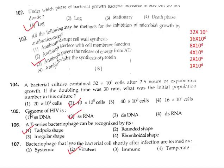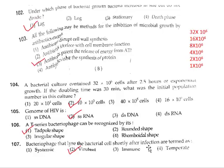Question 105: The genome of HIV is single-stranded RNA. Correct answer is option 2. Question 106: A T-series bacteriophage can be recognized by its tadpole shape. Correct answer is option 1. Question 107: Bacteriophages that lyse the bacterial cell shortly after infection are called virulent phages. Correct answer is option 2.